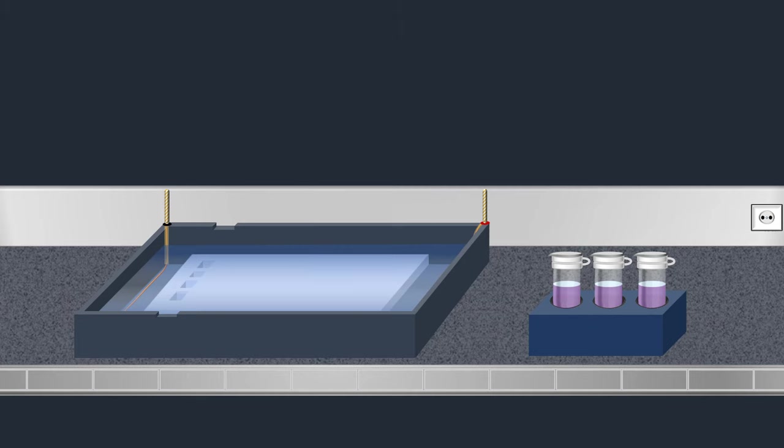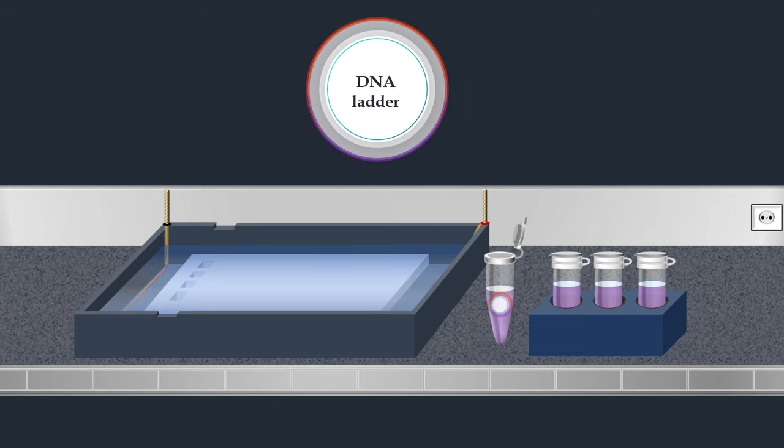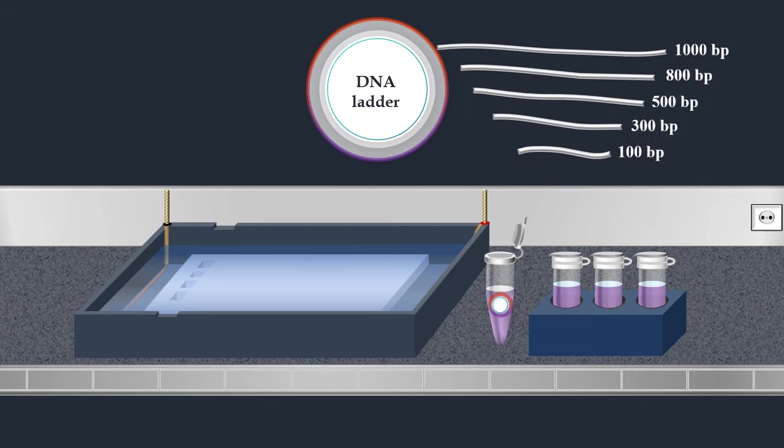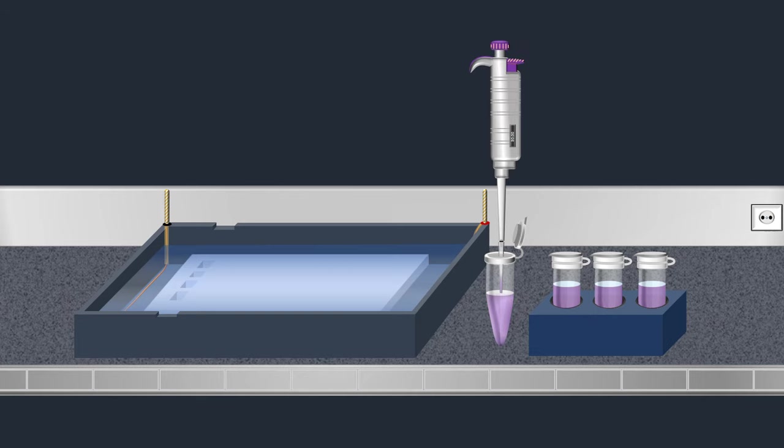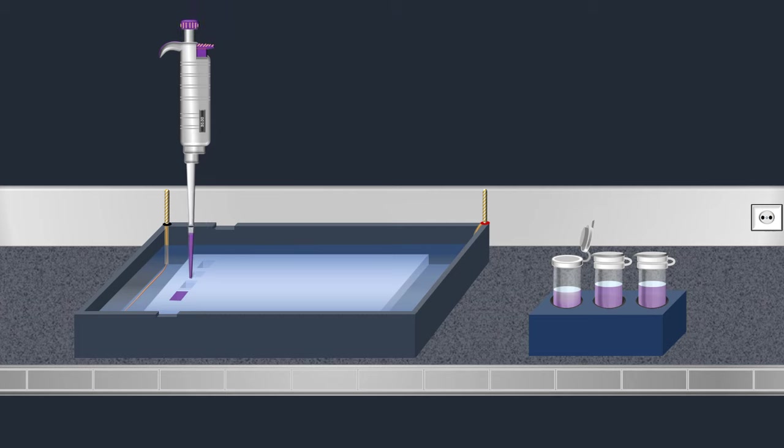During electrophoresis, a molecular weight size marker known as a DNA ladder is commonly used to determine the size of DNA fragments in the samples. The DNA ladder is added into a well at one end of the gel. Once the molecular weight size marker is added, the DNA samples are loaded into wells.